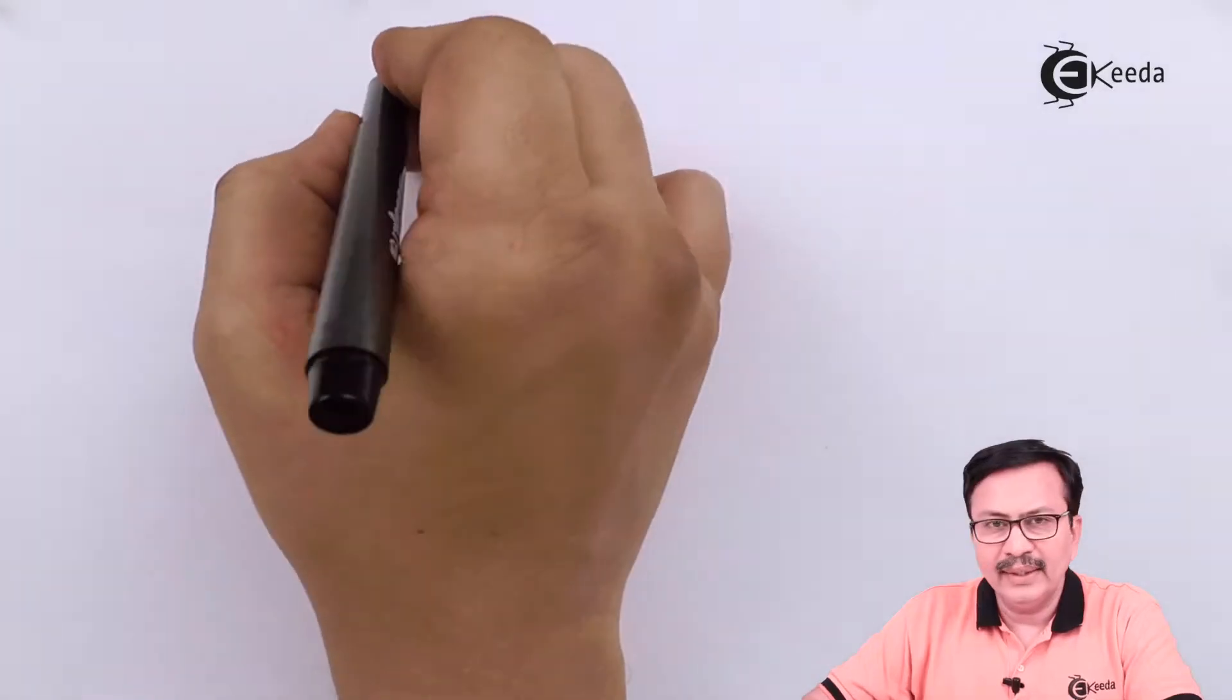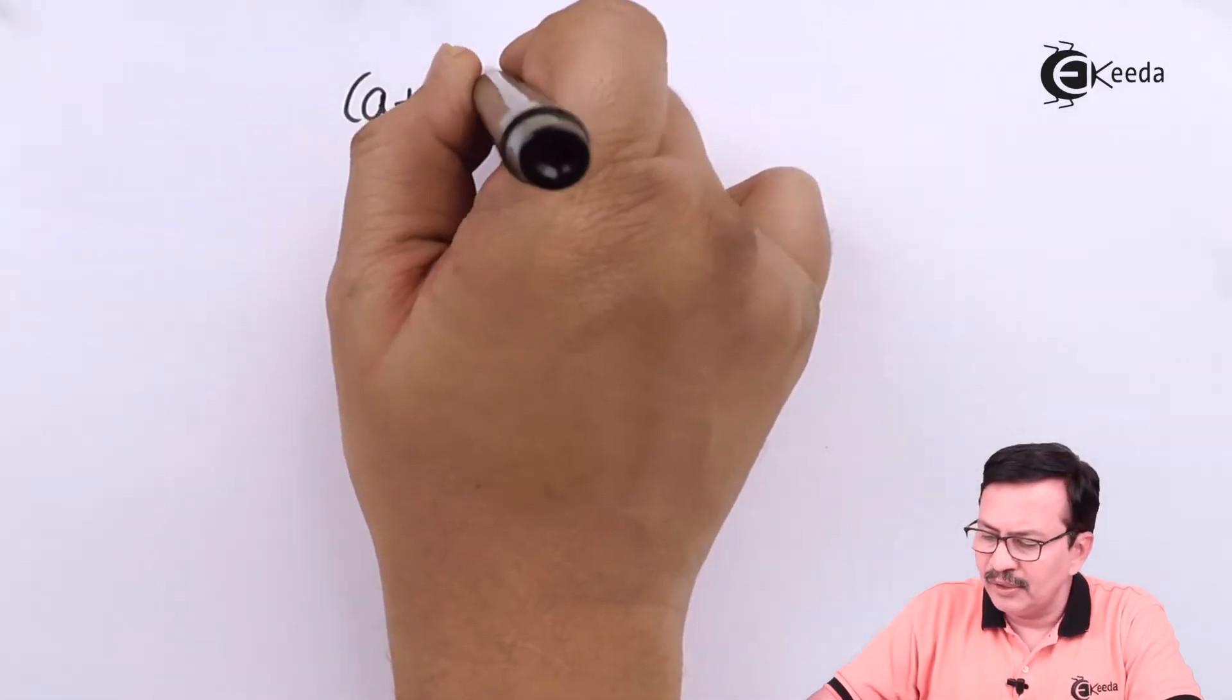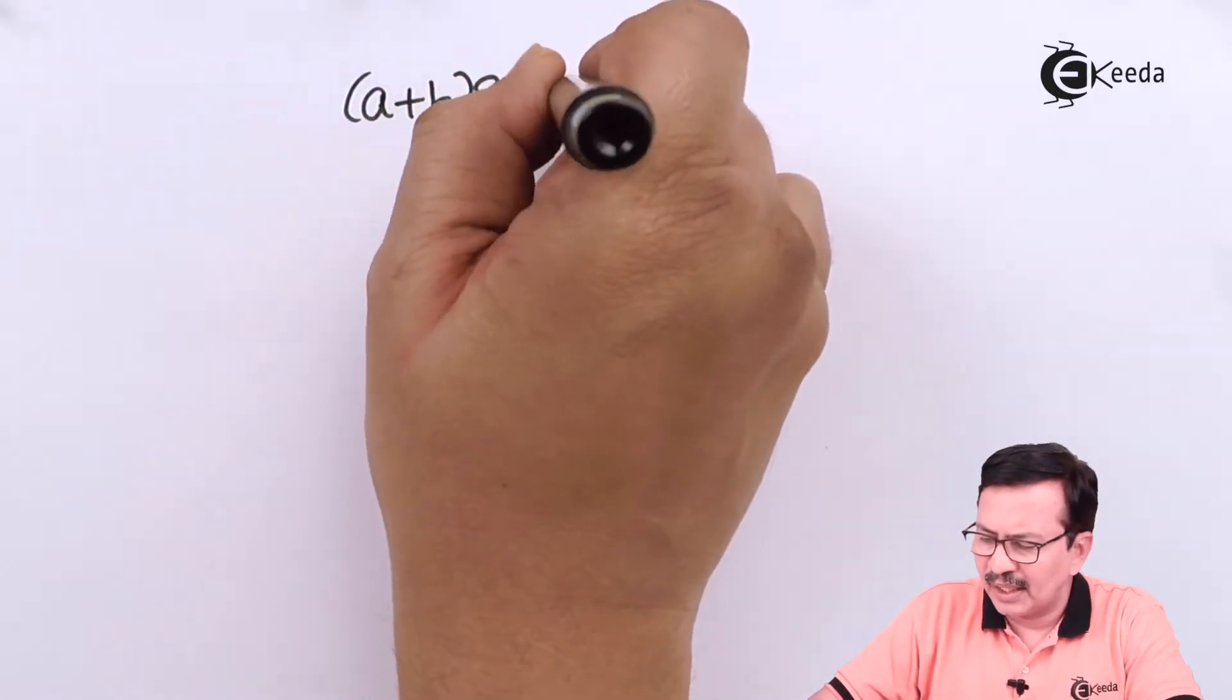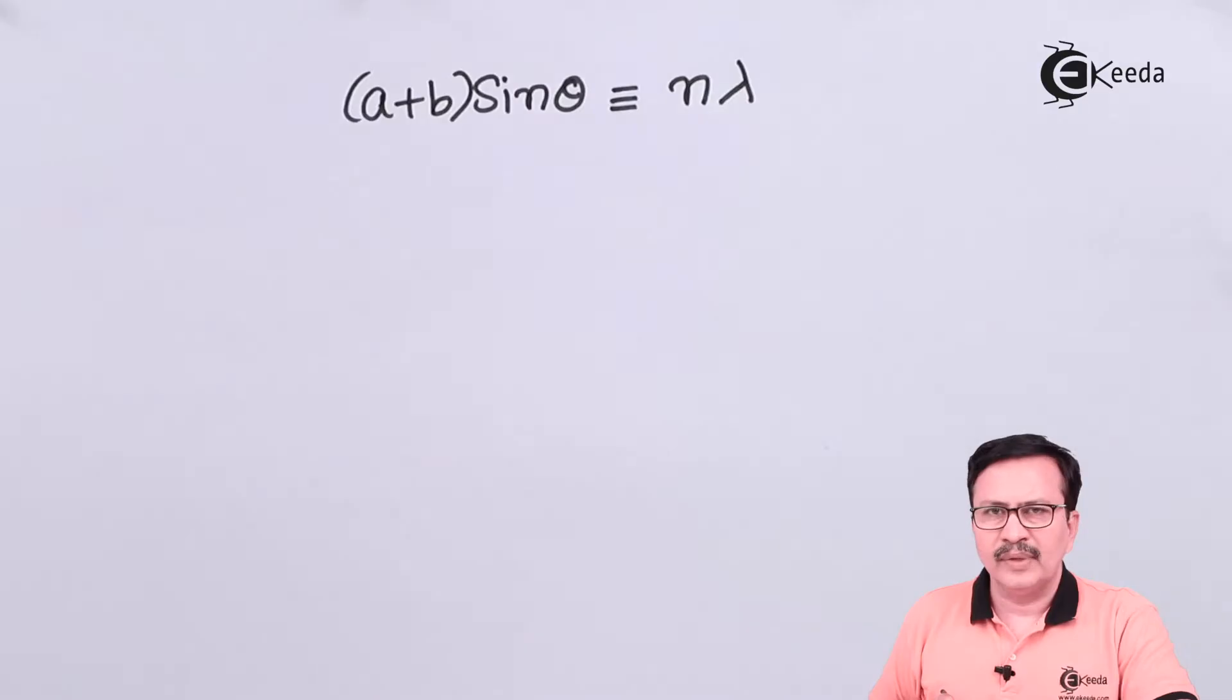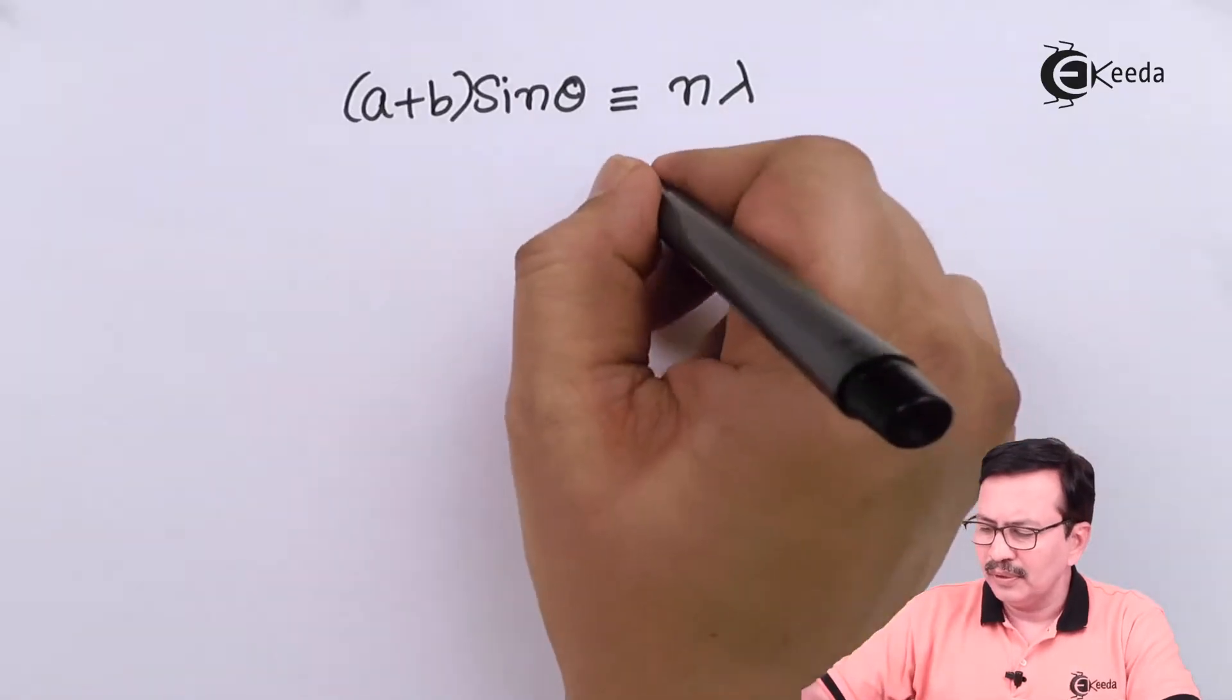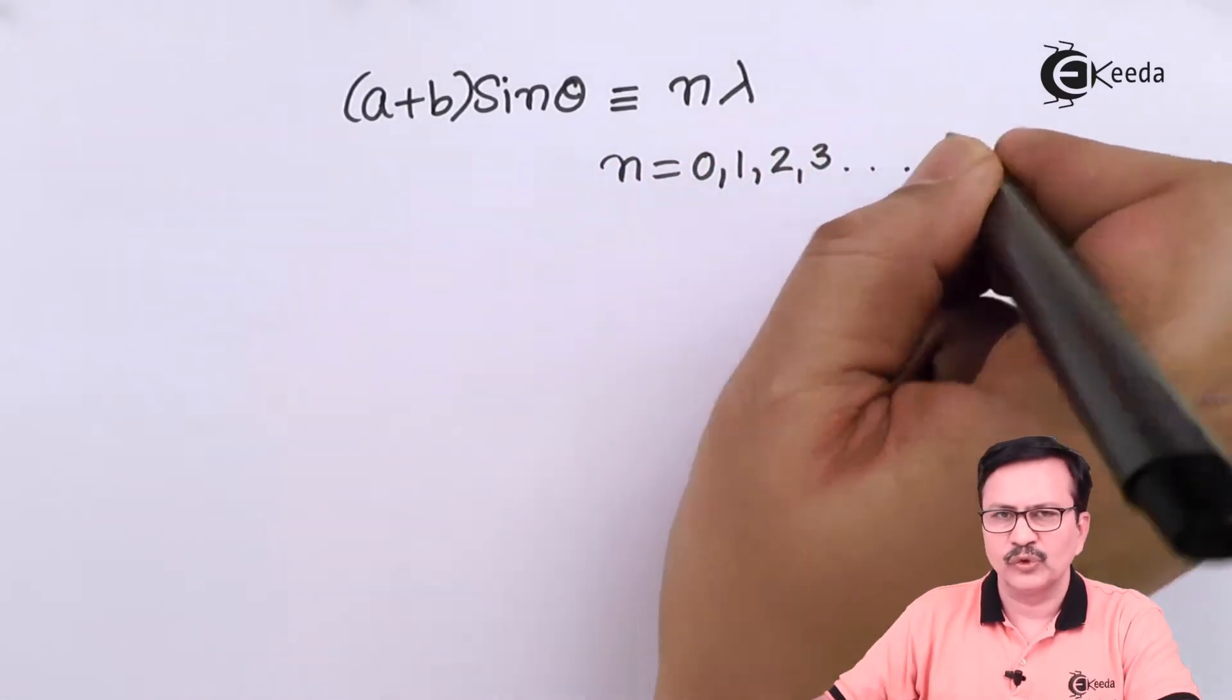The grating equation is a plus b into sine of theta is equal to n lambda, where n is equal to 0, 1, 2, 3, so on and so forth.